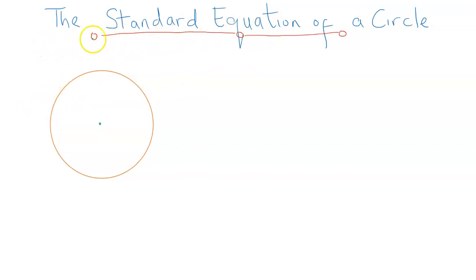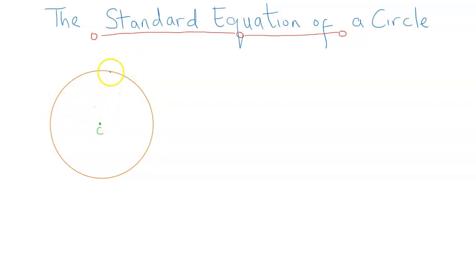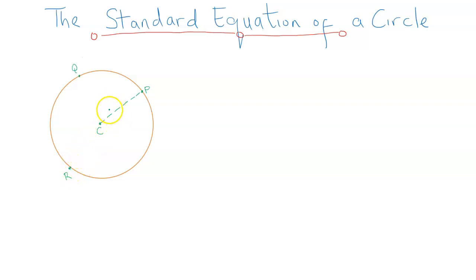Hello, everyone. In this video, we are going to be considering the standard equation of a circle. This is a circle with center C. By definition, a circle is a locus of points which is equidistant from a fixed point. The points are on the circumference — we have an infinite number of points merging together to form the circumference, and each one of them maintains a fixed distance from the center. I pick arbitrary points P, Q, and R on the circumference. The distance from C to P equals the distance from C to Q, and C to R. That distance is called the radius.